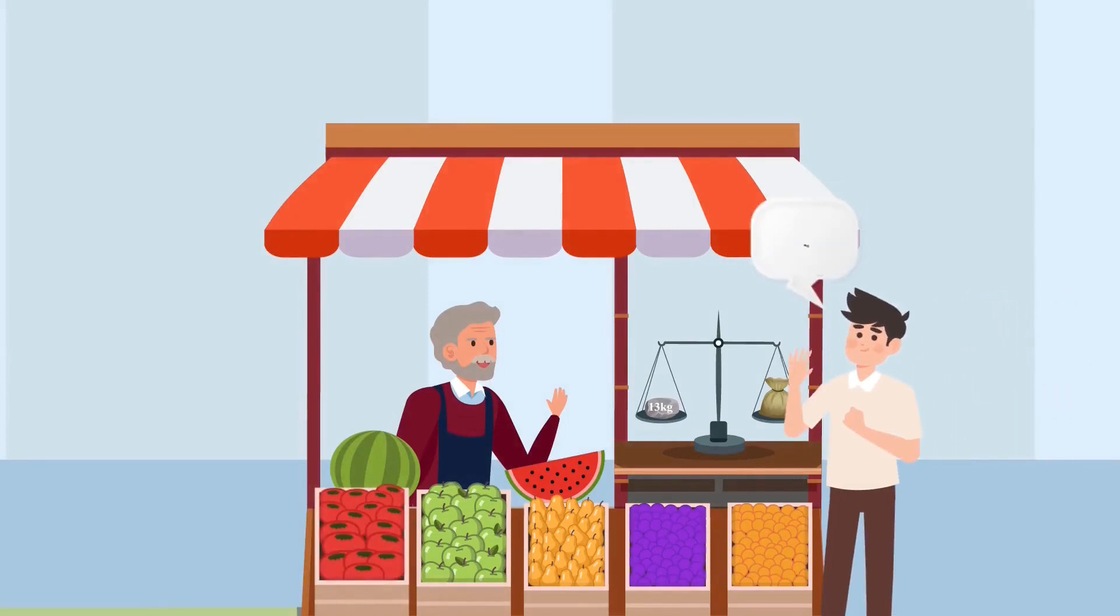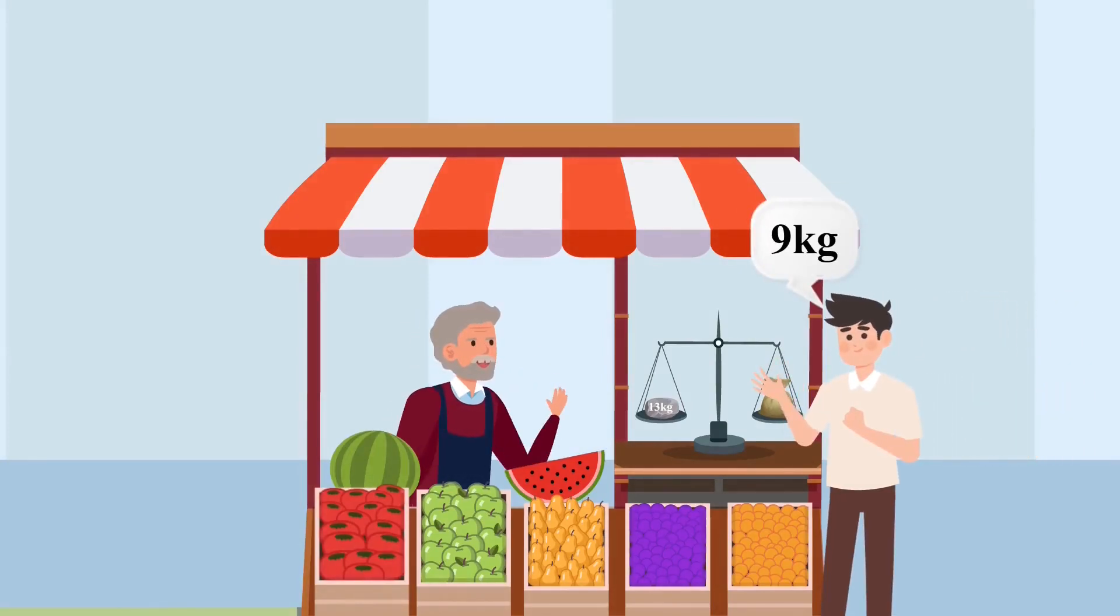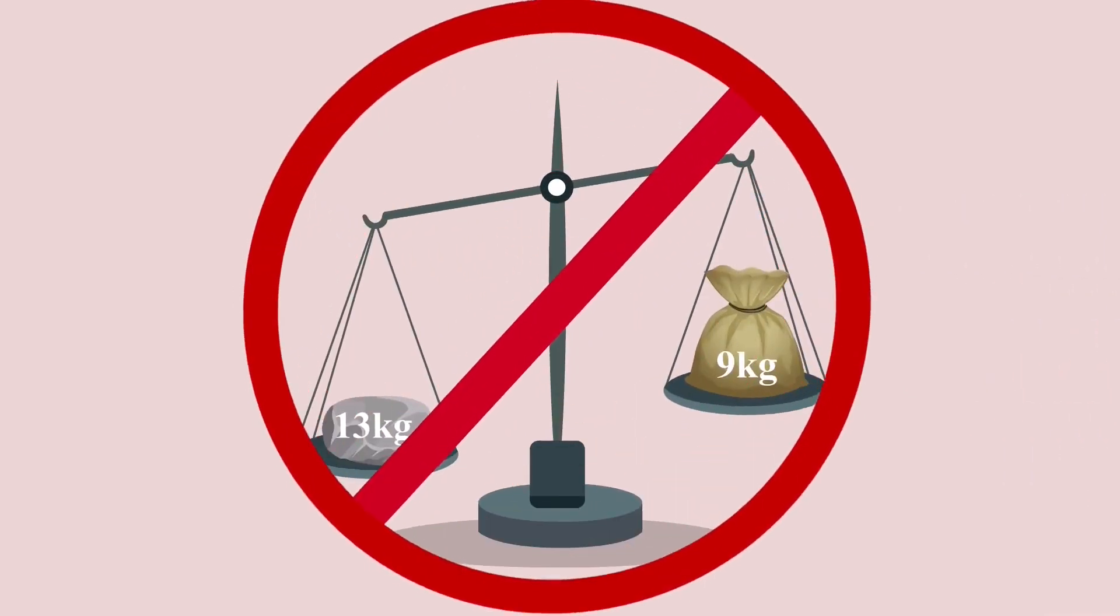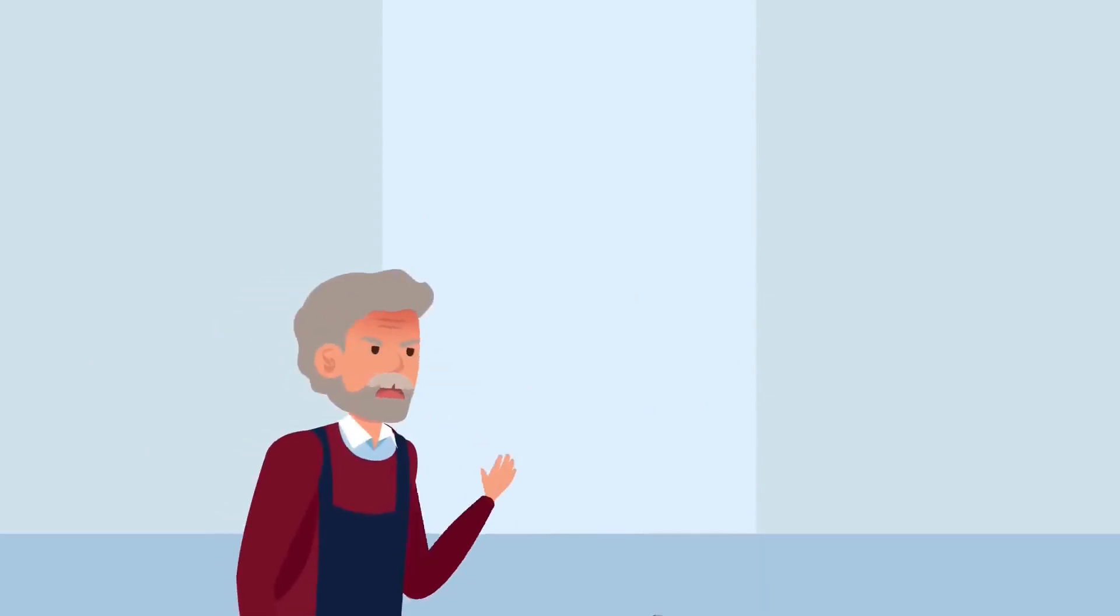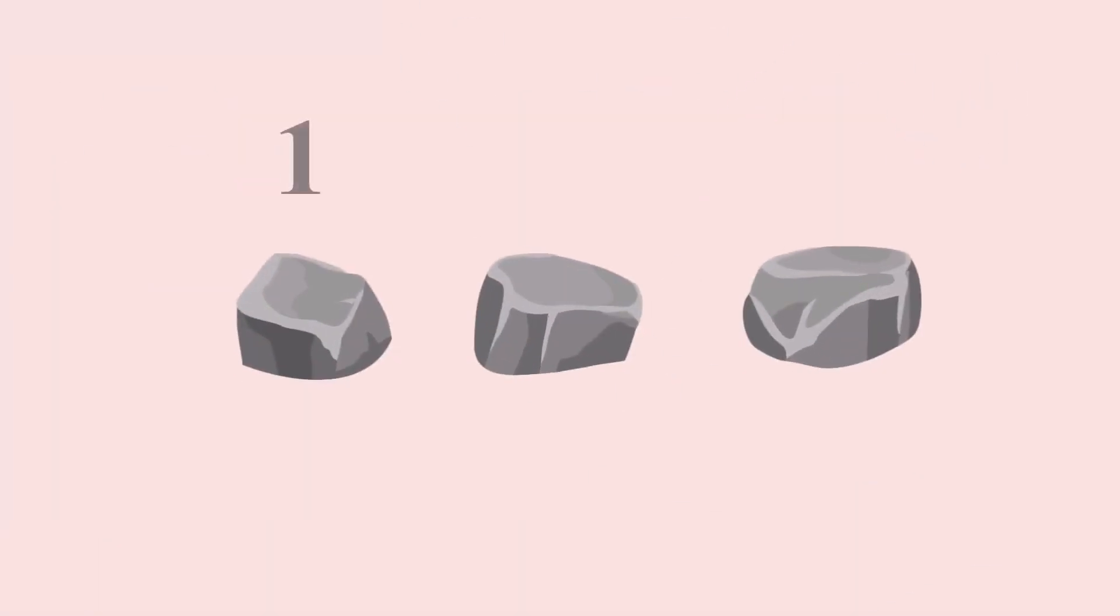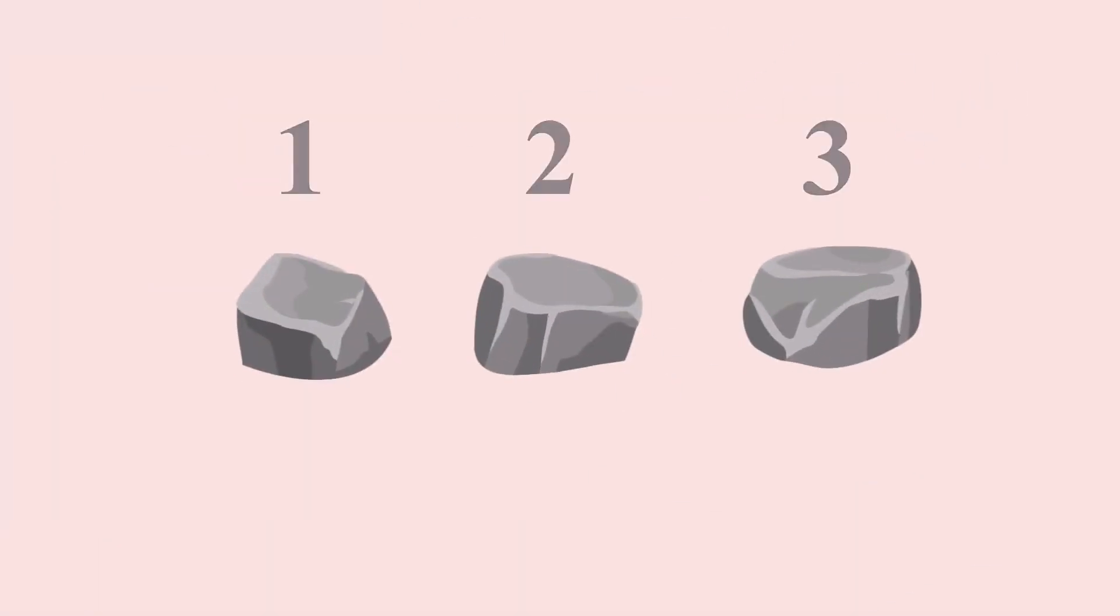One day, a person who needed 9 kg of vegetables came to his shop, but he was unable to measure that weight. Sad that he lost a customer, he threw his weight which then broke into three pieces. Surprisingly, with the help of these three pieces he was able to measure all integer weights from 1 to 13 kilograms.